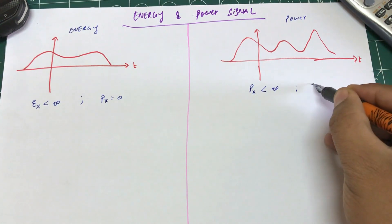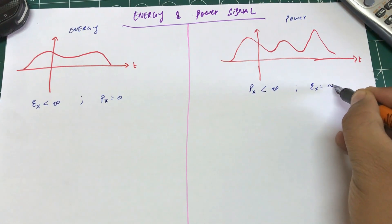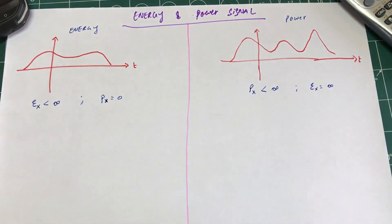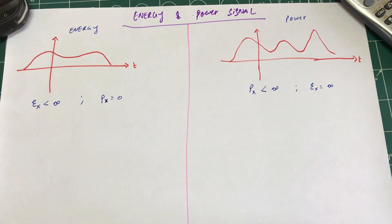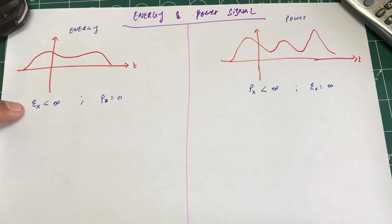In a power signal, Px — the power — is finite, but the energy is infinite. If you look at the energy you can see bursts and then pauses, so energy is infinite, but the power is finite.